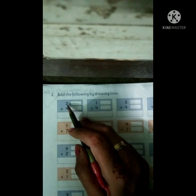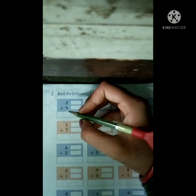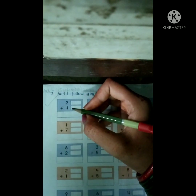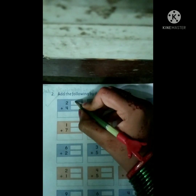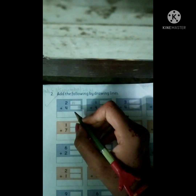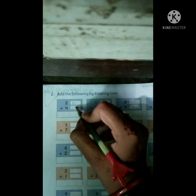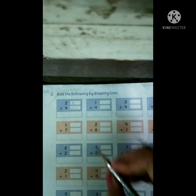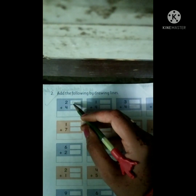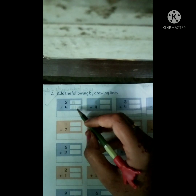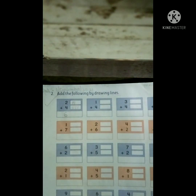Which number is this? Two. Plus, which number is this? Four. So firstly draw two lines, and again draw four lines — one, two, three, four. And count together: one, two, three, four, five, six. So there are six lines. So 2 plus 4 equals six.